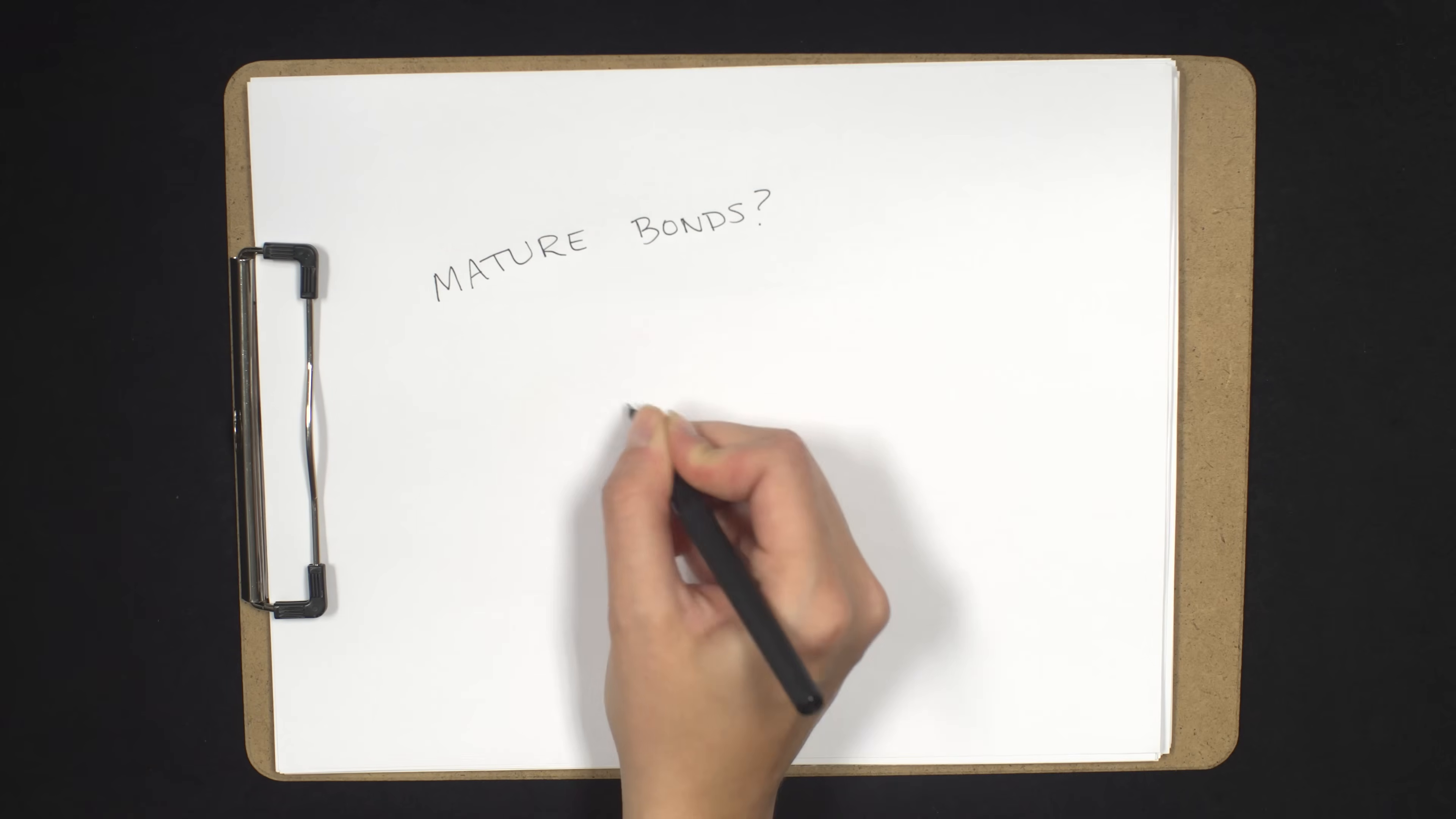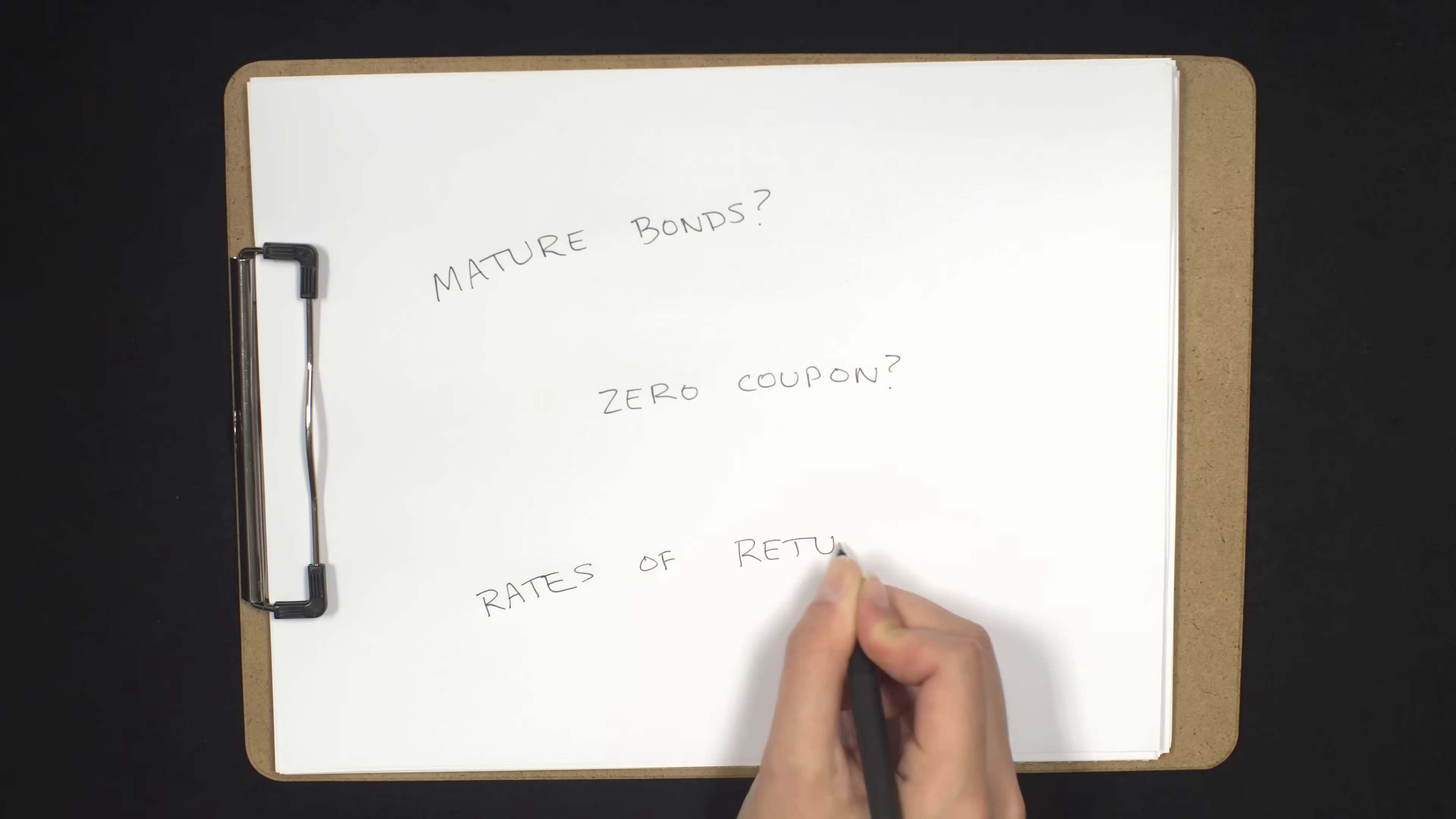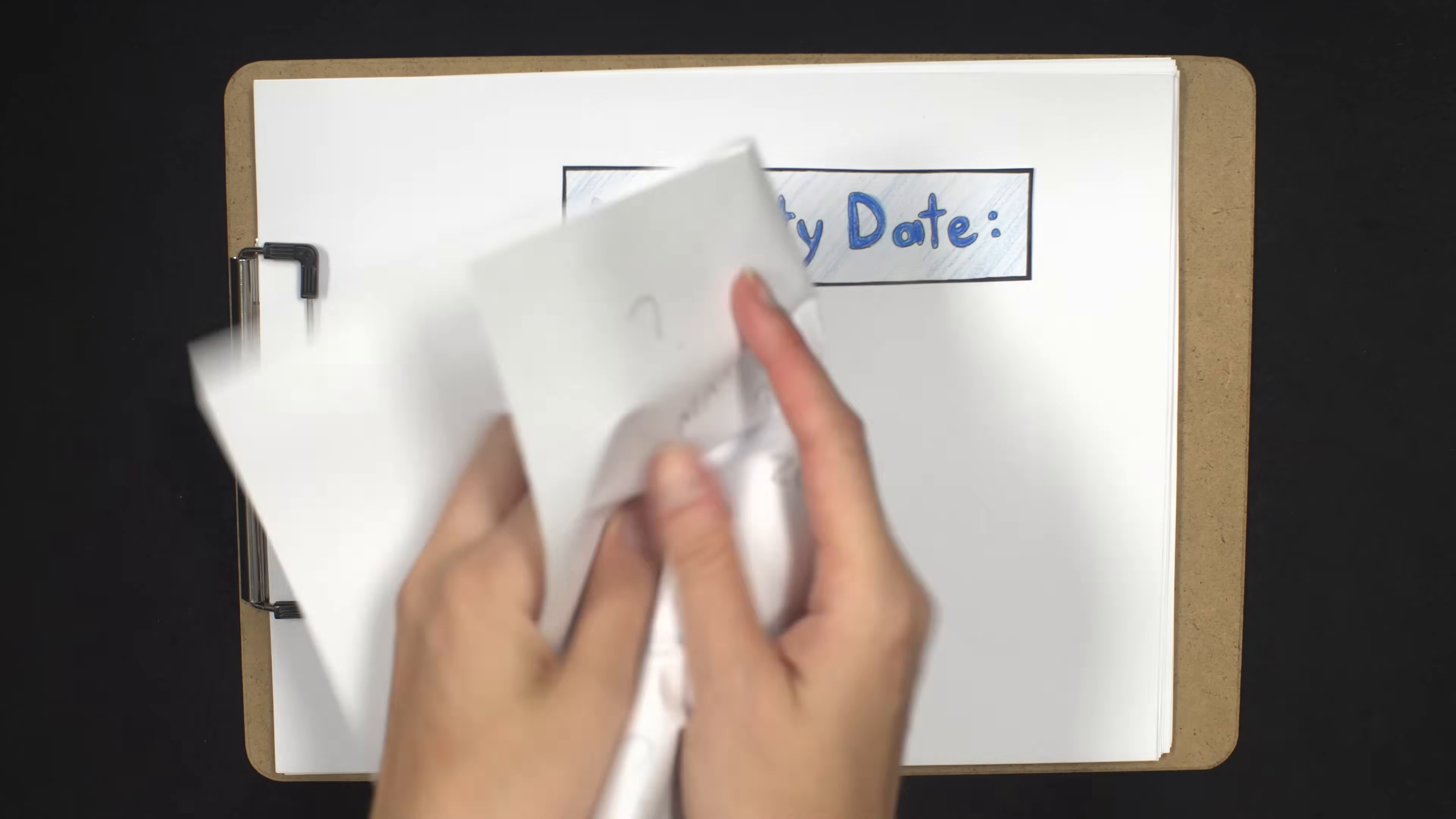This problem is surprisingly straightforward. It's just the jargon that makes it seem difficult. Mature bonds, zero-coupon, rates of return. So let's quickly break these concepts down.